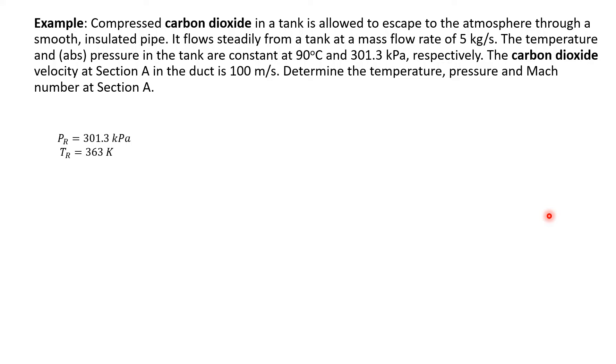So, this is the first example. Compressed carbon dioxide in a tank is allowed to escape to the atmosphere through a smooth insulated pipe. It flows steadily from a tank at mass flow rate of 5 kg per second. The temperature and absolute pressure in the tank are constant at 90 degrees C and 301.3 kPa. The velocity at section A in the duct is 100 m/s. Determine the temperature, pressure, and Mach number at section A.